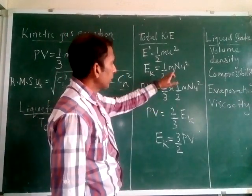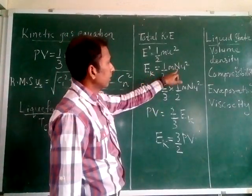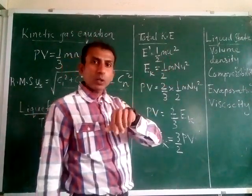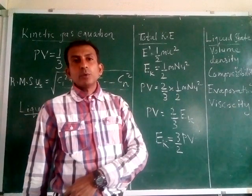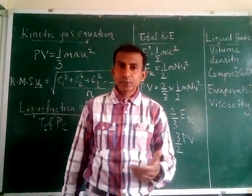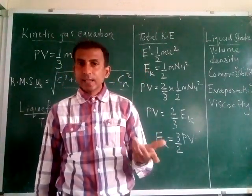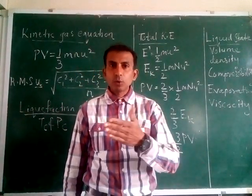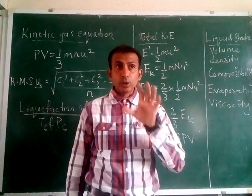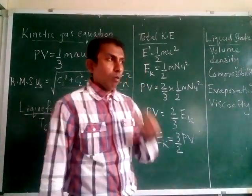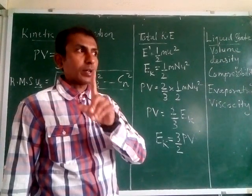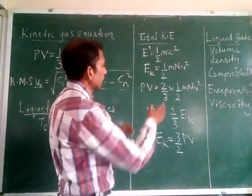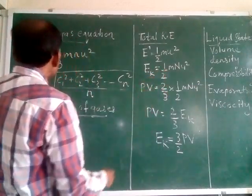One mole of a gas—then we have to introduce a new term here Ek, and between m and u we have to write capital N. N is the Avogadro number because one mole of any gas will contain Avogadro number of particles. That constant is fixed for any type of one mole of any substance.